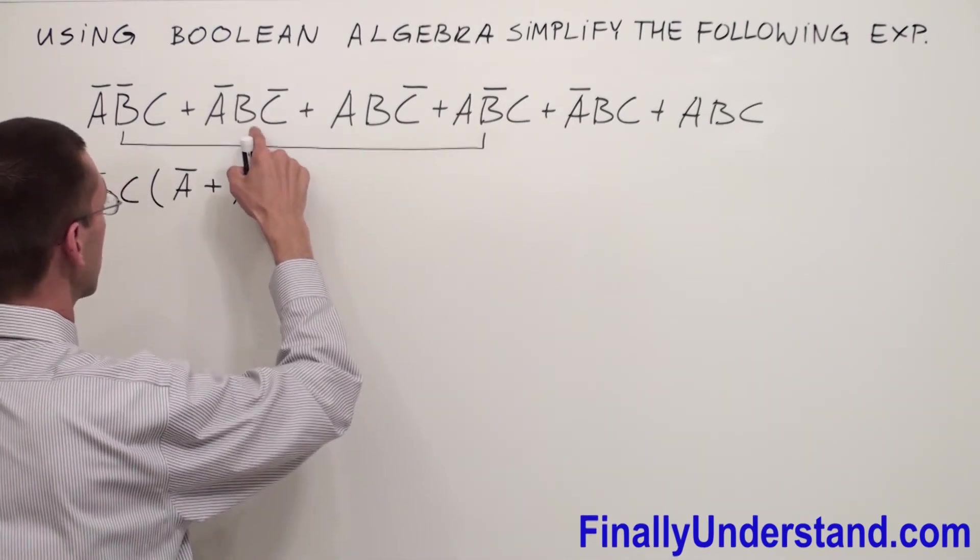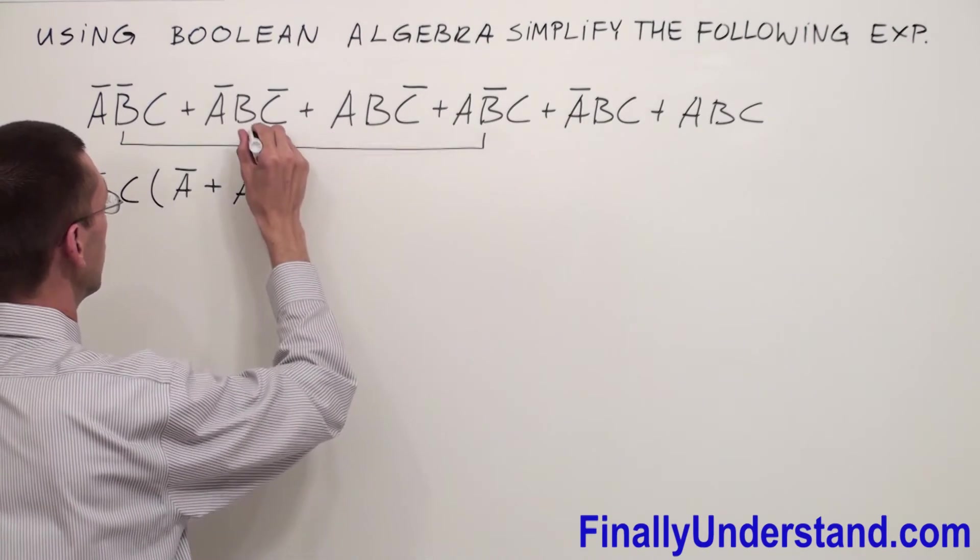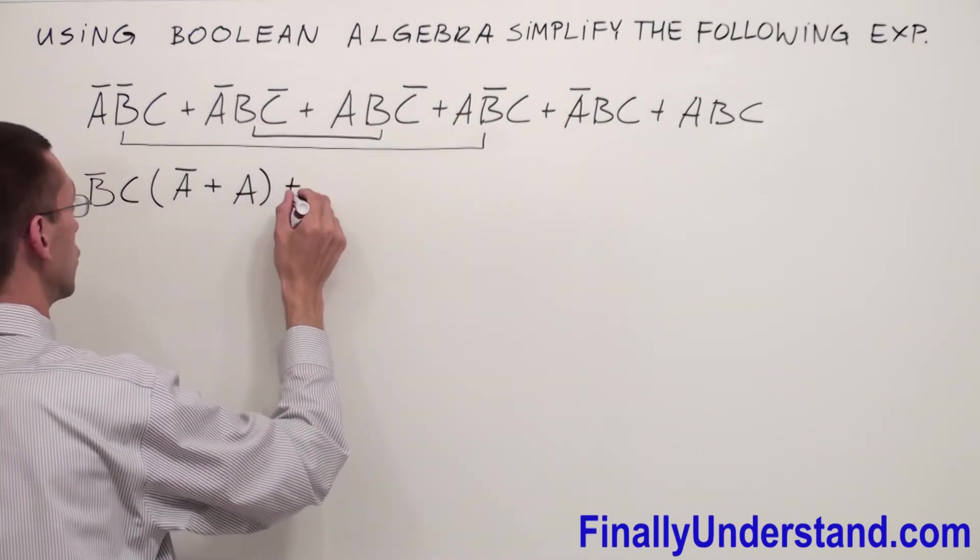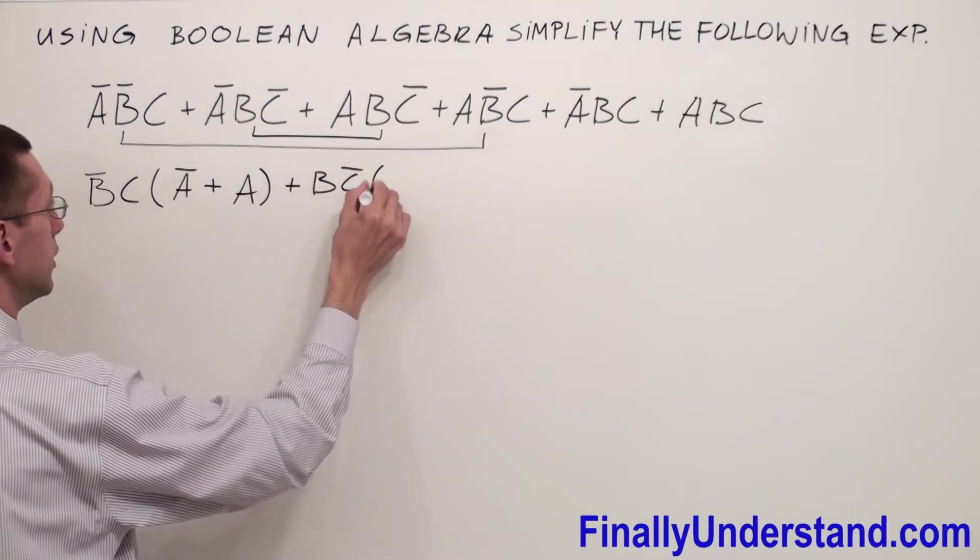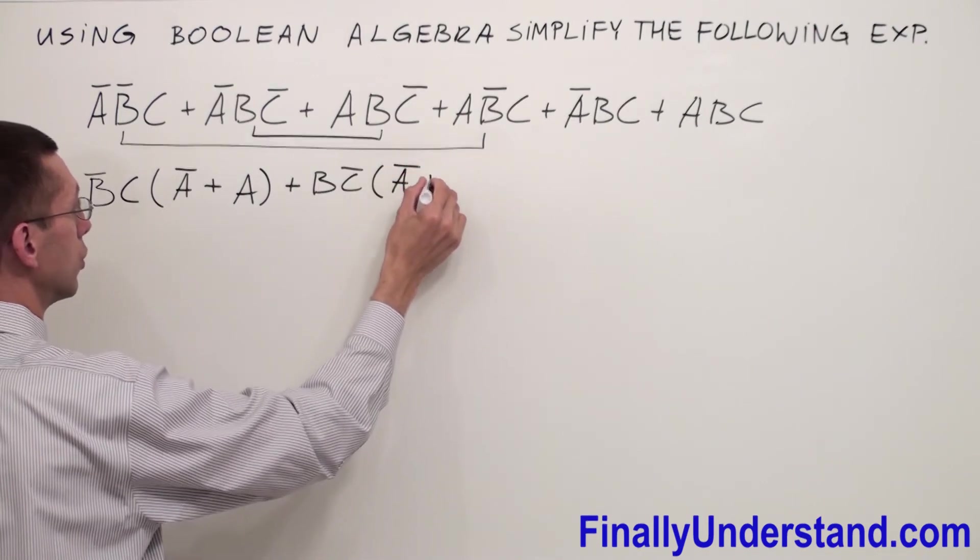Now take a look at these two terms. I can factorize from both of them BC̄. So I'm going to write or BC̄. And inside of the parentheses, I'm going to have Ā or A.